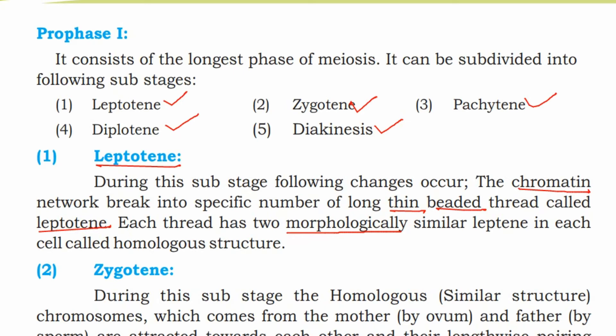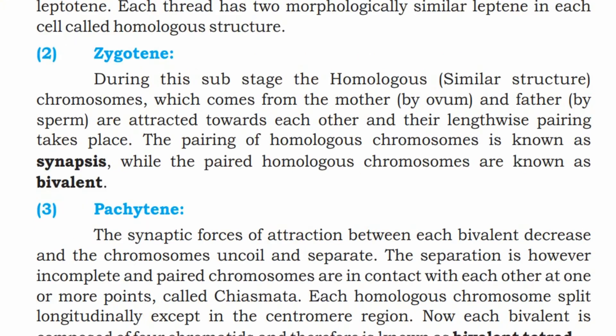During zygotene, the homologous chromosomes — one coming from the mother via ovum and one from the father via sperm — are attracted towards each other and their lengthwise pairing takes place. The pairing of homologous chromosomes is known as synapsis, while the paired homologous chromosomes are known as bivalents.